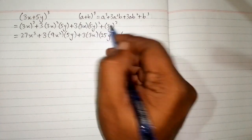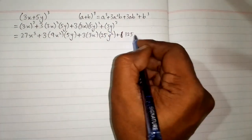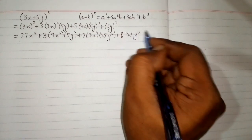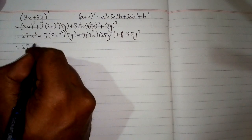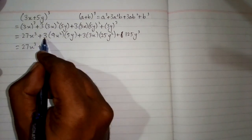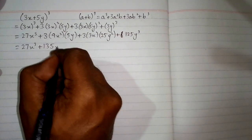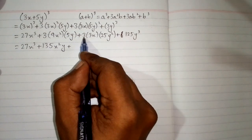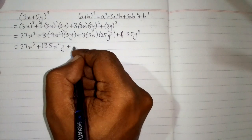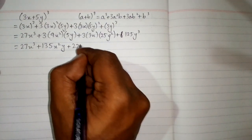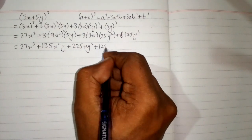Then cube of 5 is 125 and cube of y is y cube. Now we have 27x cube plus 3 times 9 times 5, which is 135, giving 135x squared y. Then plus 3 times 3 times 25, which is 225, giving 225xy squared plus 125y cube.